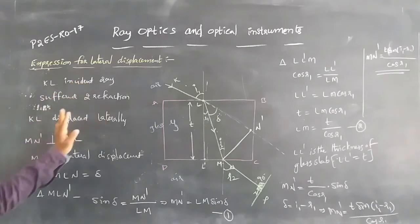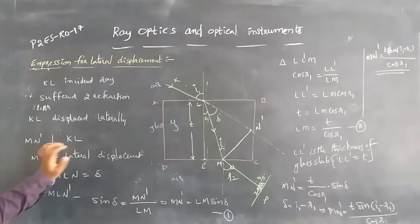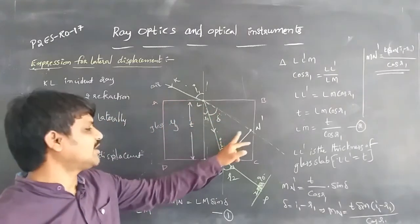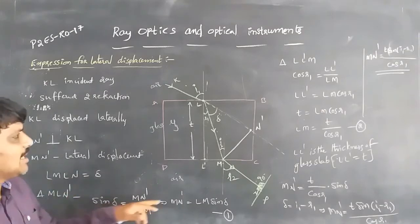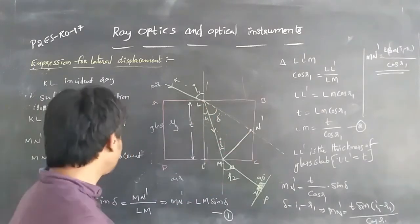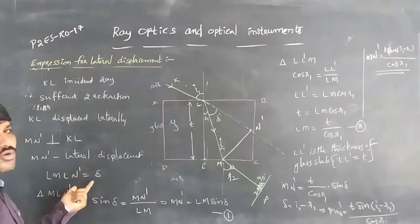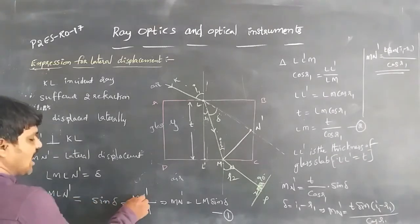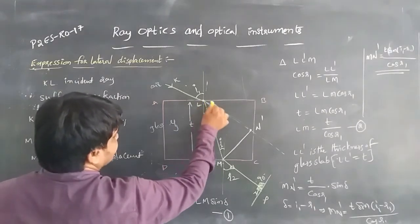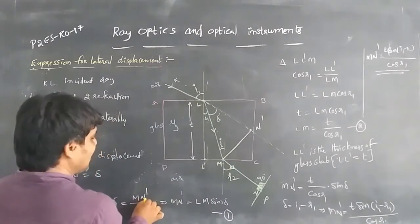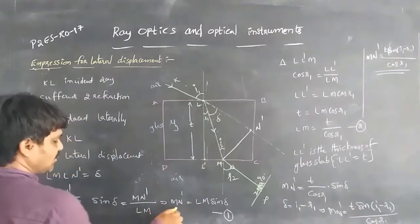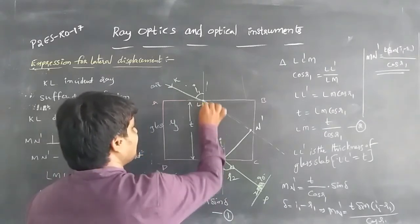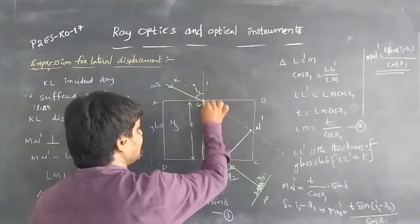KL is the incident ray suffering two refractions and is displaced laterally. MN is perpendicular to KL and is the lateral displacement. Angle MLN dash equals delta. From triangle LMN dash, sin delta equals opposite over hypotenuse, so opposite is MN dash (the lateral displacement) and hypotenuse is LM. Therefore MN dash equals LM·sin delta. This is equation 1.